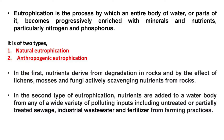The first one is natural eutrophication. In this, nutrients derive from degradation of rocks and by the effect of lichens, mosses and fungi, actively scavenging nutrients from rocks.